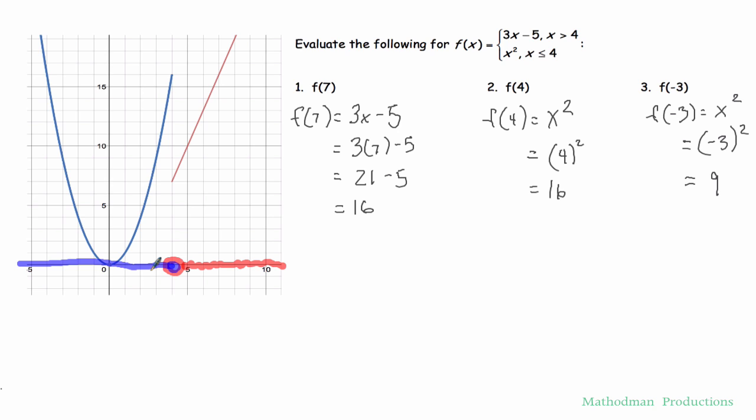So if x equals 4, then my graph should equal 16 as well. 4 is right here going up. Yep, that's 16 as well. And negative 3. If x is negative 3, then my y value should be 9. And it does match.